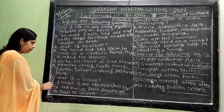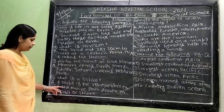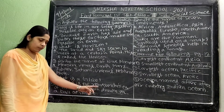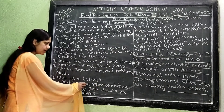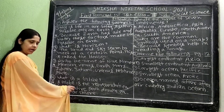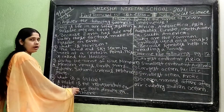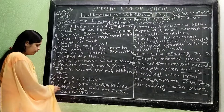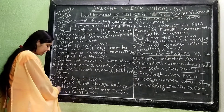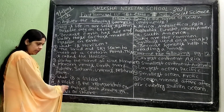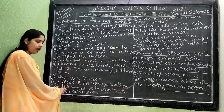Question number 4: What is a globe? Answer: A globe is the representation of the entire earth drawn on a round sphere.